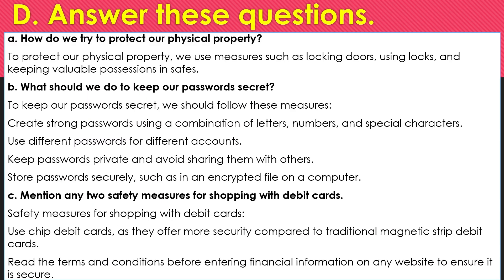D. Answer these questions. A. How do we try to protect our physical property? To protect our physical property, we use measures such as locking doors, using locks, and keeping valuable possessions in safes. B. What should we do to keep our passwords secret? To keep our passwords secret, we should create strong passwords using a combination of letters, numbers, and special characters. Use different passwords for different accounts. Keep passwords private and avoid sharing them with others. Store passwords securely, such as in an encrypted file on a computer.